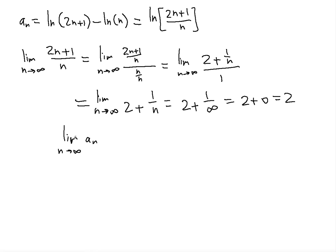So in order to find the limit as n approaches infinity of the original sequence, we have to have the limit as n approaches infinity of ln((2n+1)/n). And we know that the limit as n approaches infinity for (2n+1)/n was 2, so this basically simply turns to ln(2).